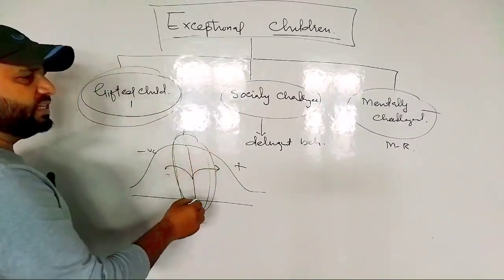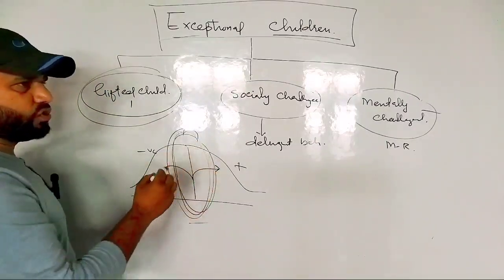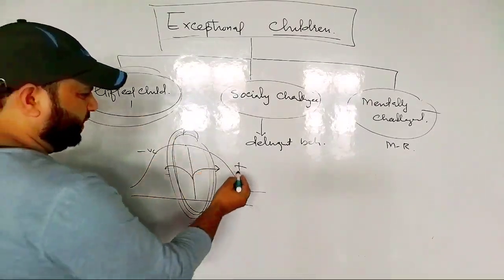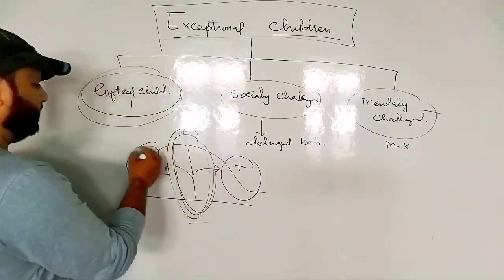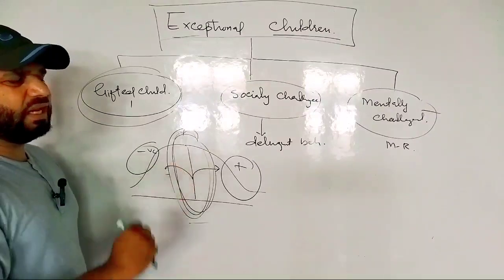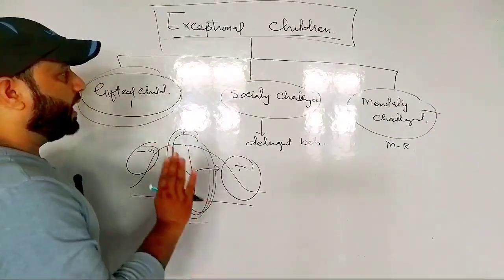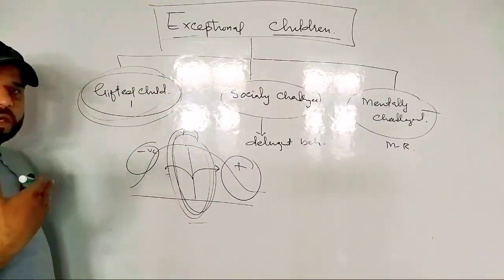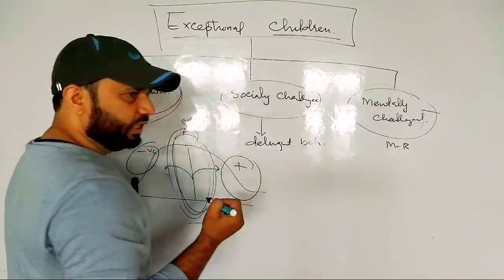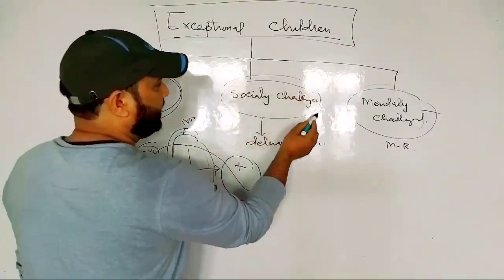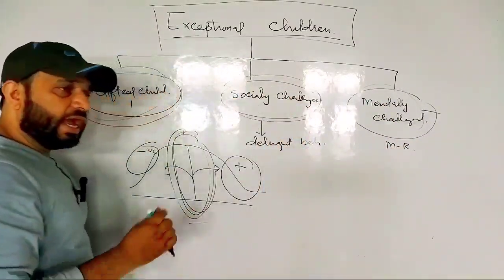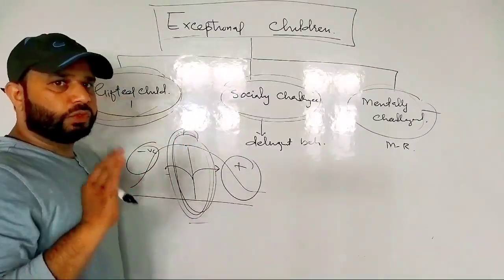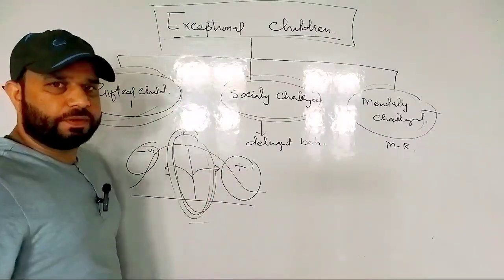The normal probability curve has three portions. The maximum population falls in the normal portion. About four percent are gifted and four percent are mentally challenged. Today we will discuss gifted children; after that, mentally challenged, then socially challenged, and finally inclusive education and its characteristics.